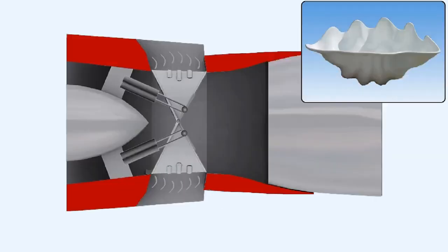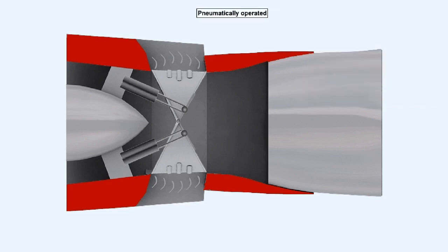The name clamshell has been applied to this system of reverse thrust because of the shape of the reverser doors, which resembles that of a clamshell. In the clamshell door system, the reverser doors are usually pneumatically operated. They use high pressure compressor air as the power source.